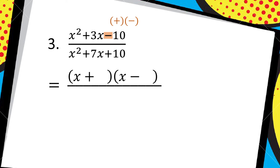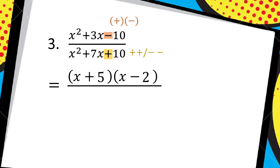Then I'm going to say: what are the factors of 10 that when I subtract the factors I get 3? 1 and 10? No — 10 minus 1 gives me 9. 5 and 2? Yes — 5 minus 2 gives me my middle term, which is positive 3. So 5 minus 2. Then I do the same with the denominator. I can see I'm working with a positive last term, so my brackets will either have two pluses or two minuses. Factors of 10 that when added give 7 — again 5 and 2, but positive: 5 plus 2 gives positive 7. So I can put those in: 5 plus 2.